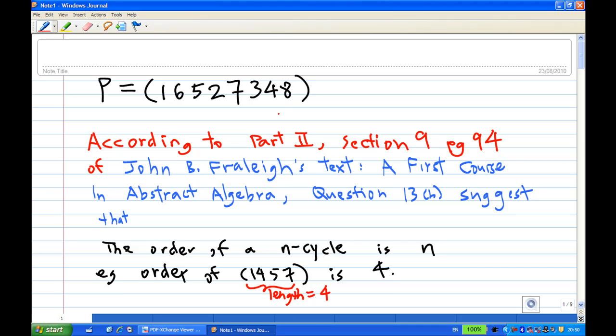According to part 2, section 9, page 94 of John's text A First Course in Abstract Algebra, question 13b suggests that the order of an n-cycle is n.